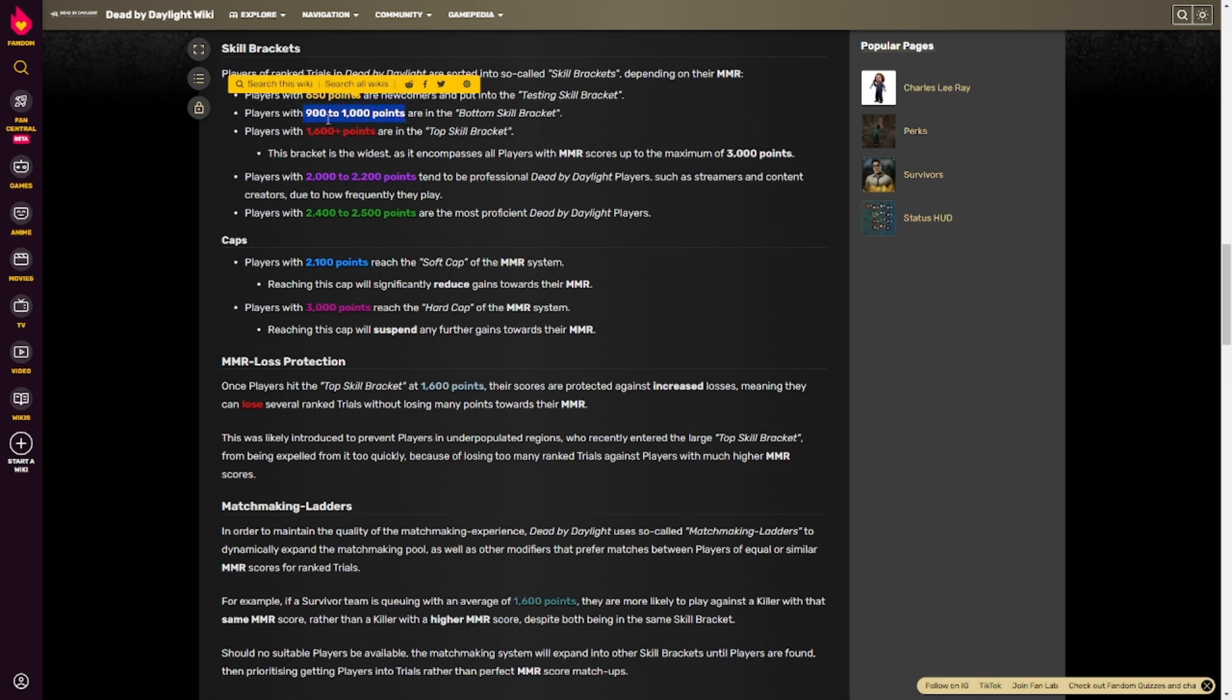They then move up, if they win, to 900 to 1,000 points, which is considered the bottom skill bracket. You then get up to 1,600 and above, which is the top skill bracket. It says here this bracket is the widest. It encompasses all players with MMR scores up to the maximum of 3,000 points. And then you have over 2,000 is where professional players go, such as streamers and content creators. And then 2,400 and above is for the most proficient Dead by Daylight players.